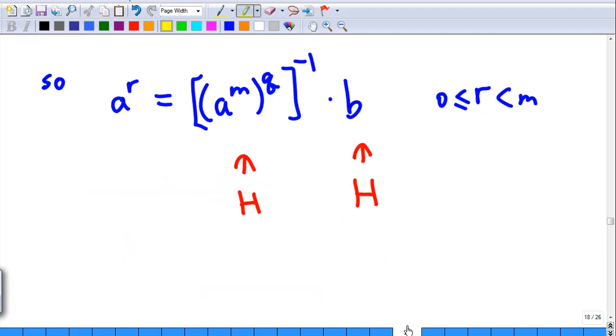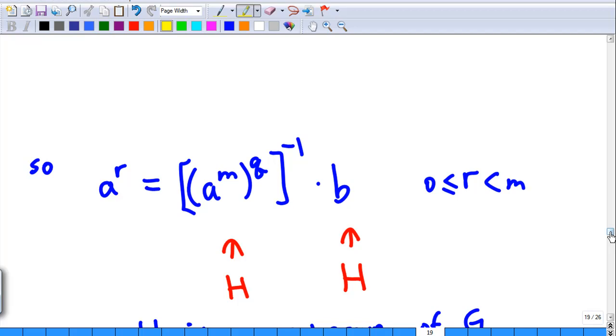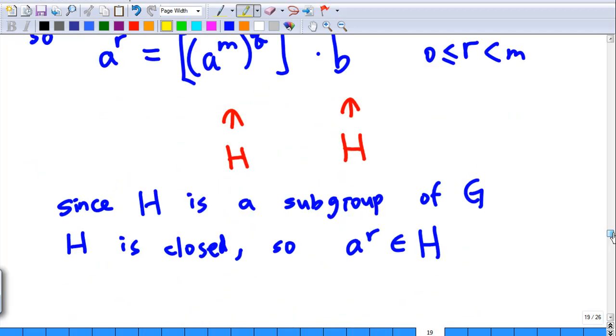Since a power r equals this expression, and we know that the first term is in H, since the inverse of a power m raised to power q is in H, and b is also in H, as H is a subgroup, therefore by the closure of H, we know that a power r is also in H.